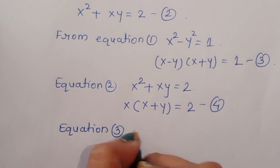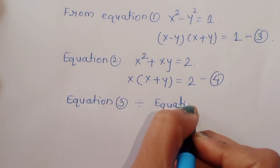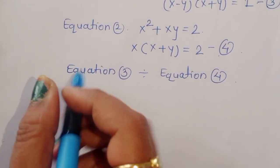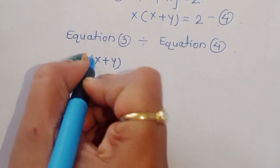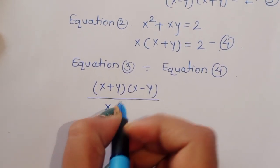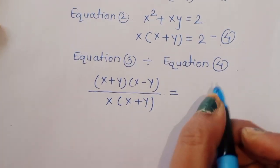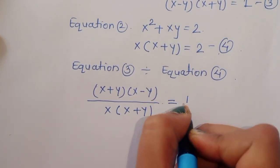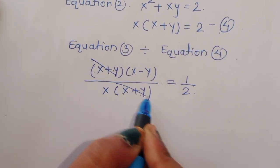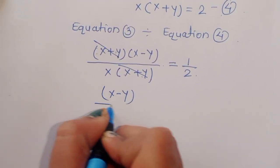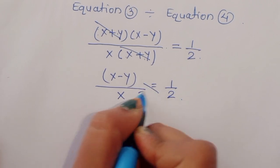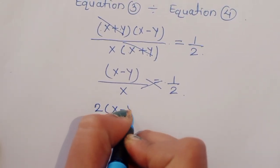Now we divide equation 3 by equation 4. Equation 3 is (x minus y)(x plus y) equals 1, and equation 4 is x(x plus y) equals 2. Dividing, the (x plus y) terms cancel, giving (x minus y) divided by x equals 1 divided by 2.